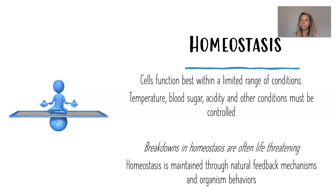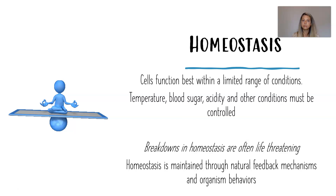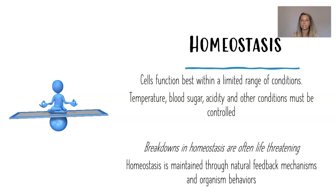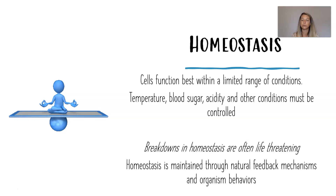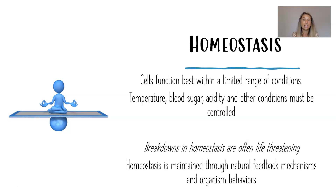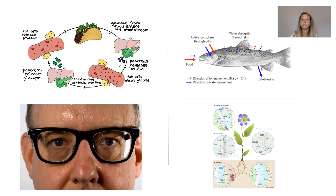Breakdowns in homeostasis are not good and often life-threatening, whether the organism is unicellular or multicellular. Homeostasis is maintained through natural feedback mechanisms — things that happen naturally in the organism — but also through organism behaviors. For example, if your body temperature goes up, natural processes start regulating it. But if you touch a hot pan, you behave in a way that maintains homeostasis by removing your hand. Pause on this slide to see examples of organisms maintaining homeostasis and choose one to write about on your paper.